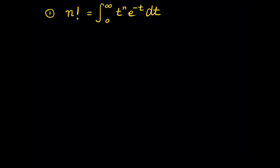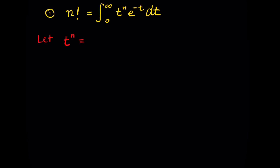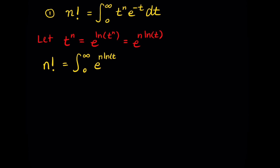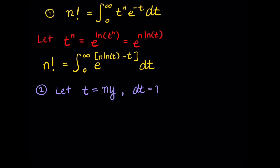We begin by defining n factorial using something called the gamma function. The gamma function is defined by this indefinite integral from 0 to infinity of t to the nth power times e to the negative t, dt. We're going to do a substitution: t to the nth power becomes e to the n times the natural log of t. This allows us to combine the integrands into a single exponential whose exponent is n times the natural log of t minus t.